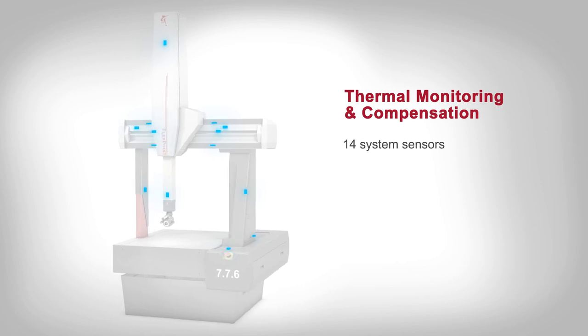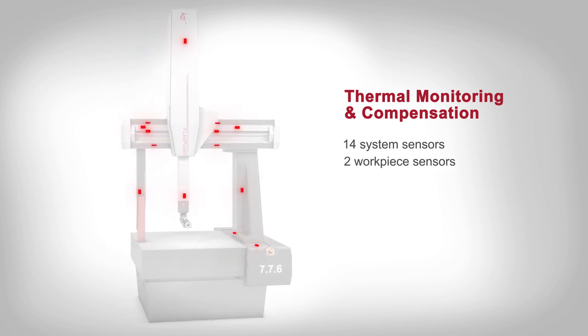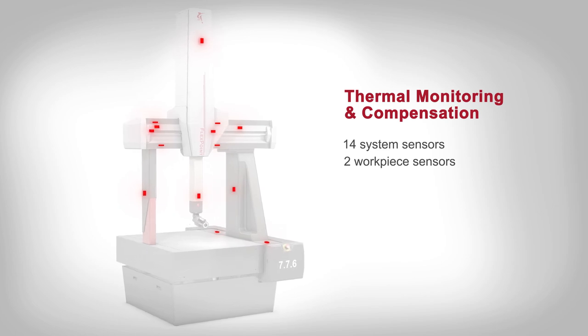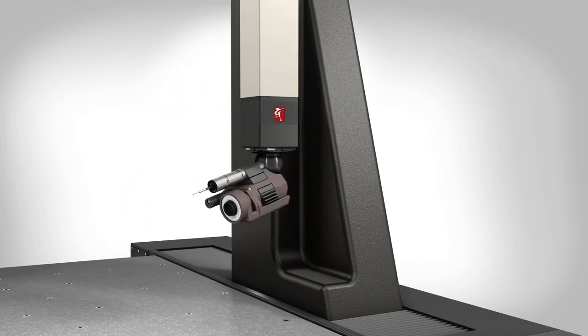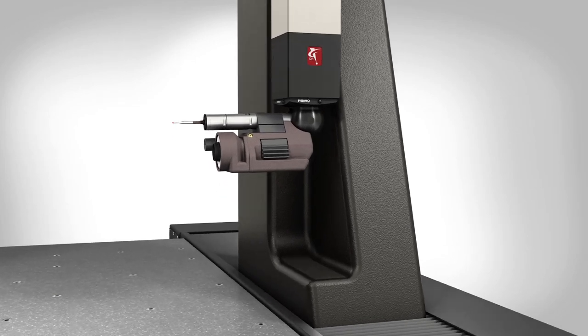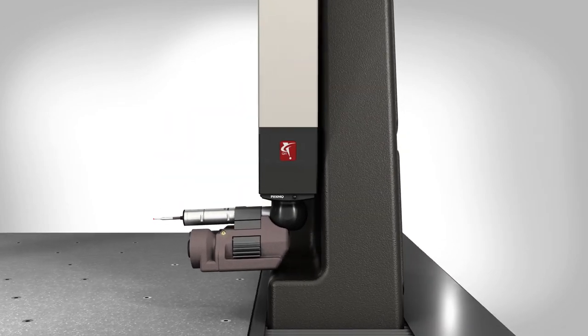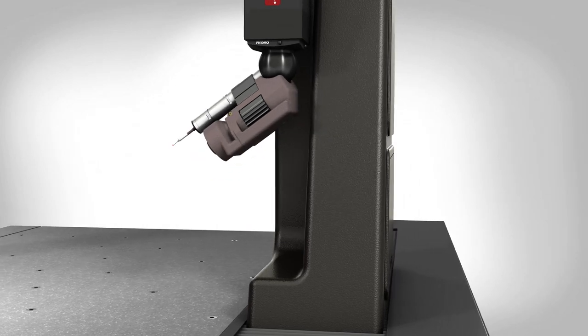Fourteen system temperature sensors and two workpiece temperature sensors provide input to the thermal compensation network. The patented cast-in pocket in the shoulder offers additional probe head clearance, allowing maximum measuring range while maintaining a compact footprint.